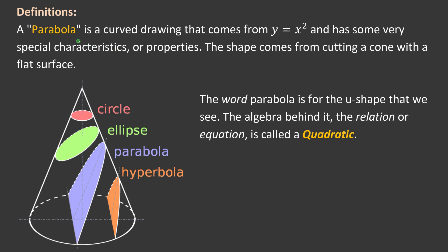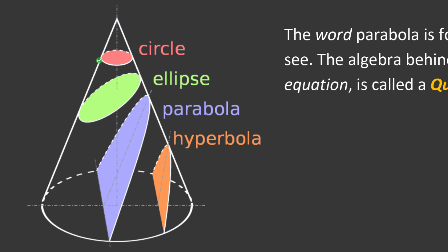Let's go through a couple of definitions. A parabola is the curve from y equals x squared, and it has some very special characteristics, otherwise known as properties. The shape actually comes from cutting a cone with a flat surface. If we cut a cone flat horizontally, we get a circle. If we angle it slightly, we get an ellipse. But if we follow the slope of the edge of the cone and make a parallel cut with a flat surface, we get a parabola.